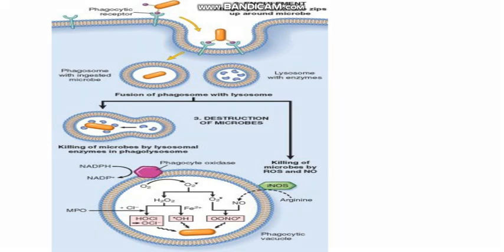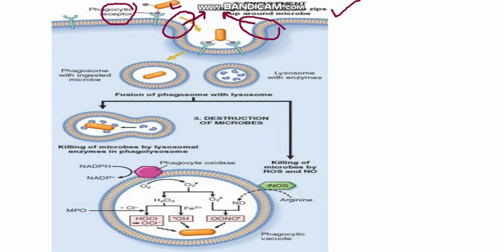In this diagram, the yellow one is the microbe — the phagocytic receptor has already recognized it. Engulfment takes place by formation of pseudopodia through polymerization of actin filaments, involving cytoskeletal changes. This pseudopodia moves further and further, resulting in formation of a phagosome, which pinches off from the plasma membrane. A lysosome present in the WBC contains hydrolytic enzymes, and when the phagosome combines with the lysosome, a phagolysosome is formed.